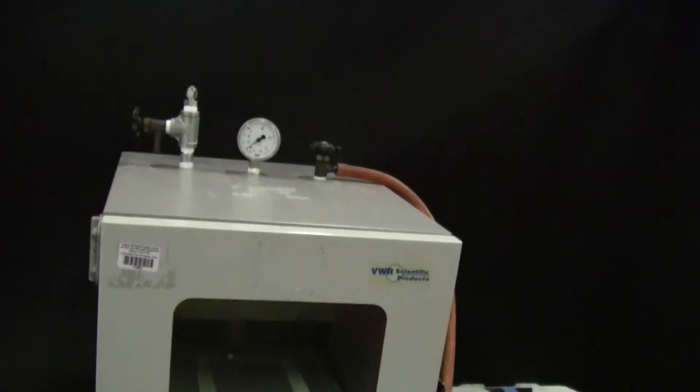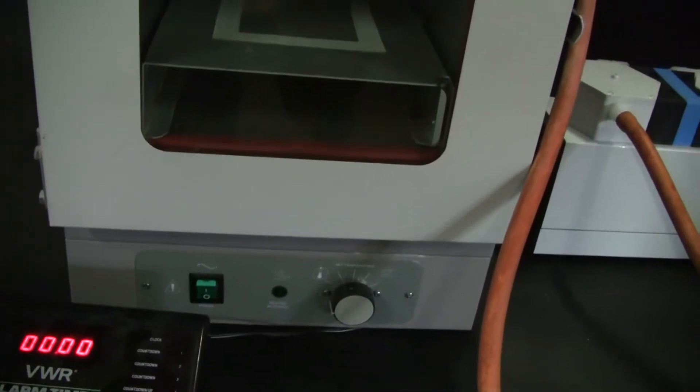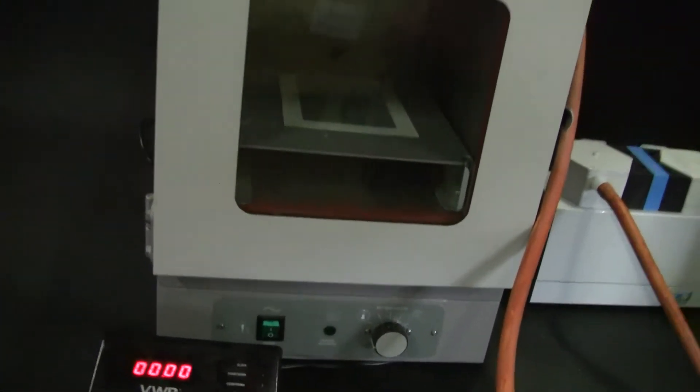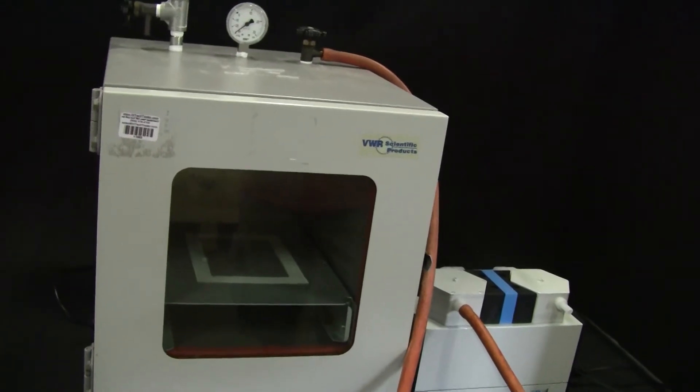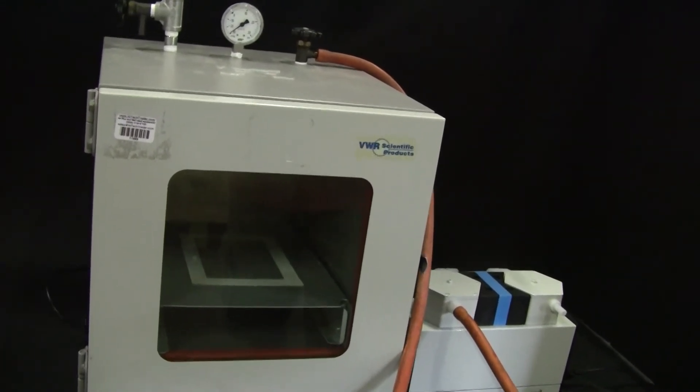The second item is a vacuum oven model 1400, manufactured by Sheldon Shell Lab Manufacturing. The chamber size is 9 x 9 x 12 inches deep, which correlates to 0.6 cubic feet.